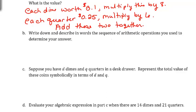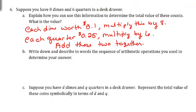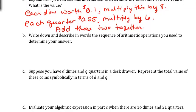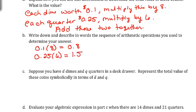We take 0.10 times 8, which gives 0.80, or 80 cents. Then we take 0.25 and multiply by 6, giving 1.50. Adding them together: 0.80 plus 1.50 gives us $2.30.